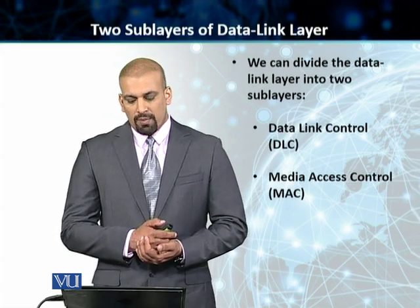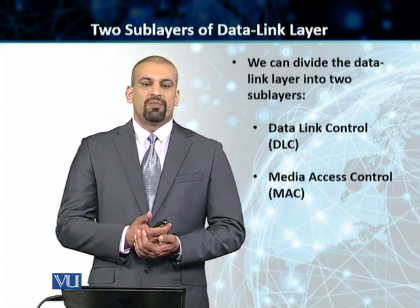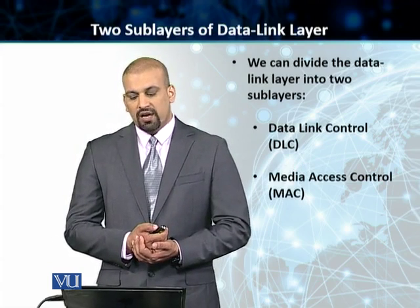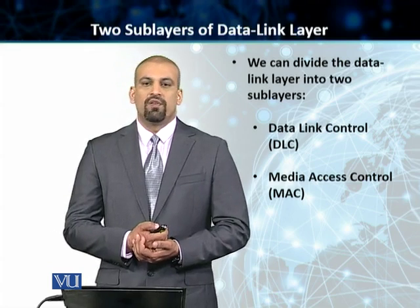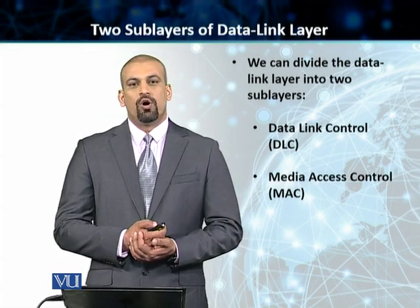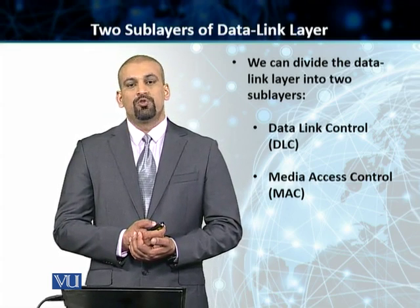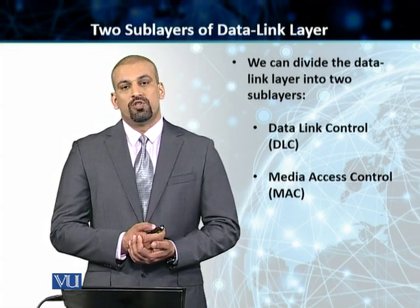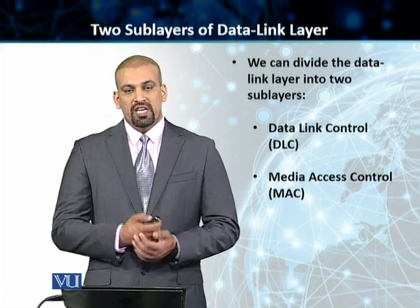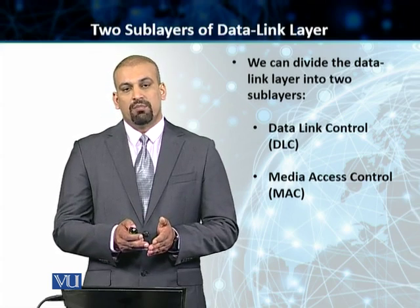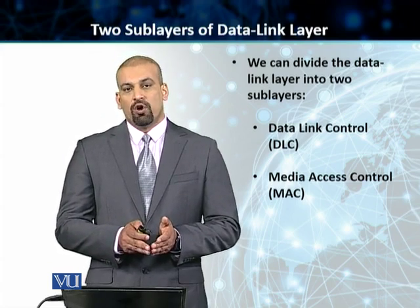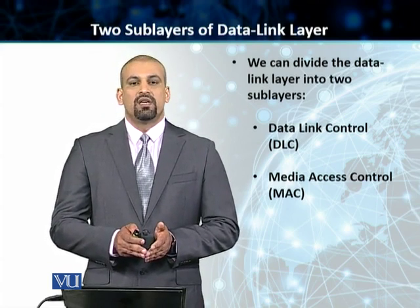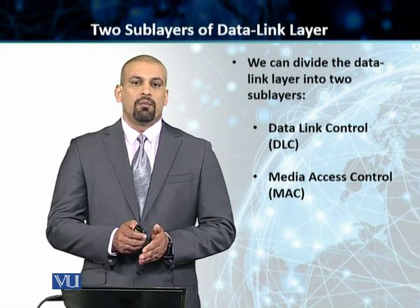Now let's talk about the two sub-layers that we divide our data link layer into. Those sub-layers are data link control, or DLC, and media access control, or MAC. Your textbook has two full chapters which talk about each one of these layers in further detail. But for now, you need to know that you have got two layers: one is data link control, DLC, and the other one is media access control, or MAC.